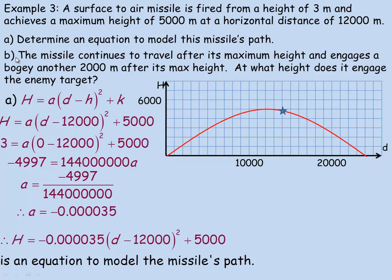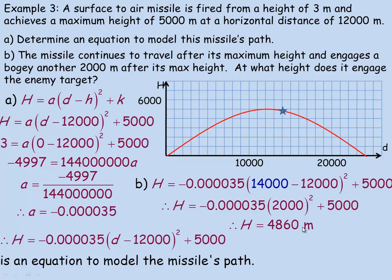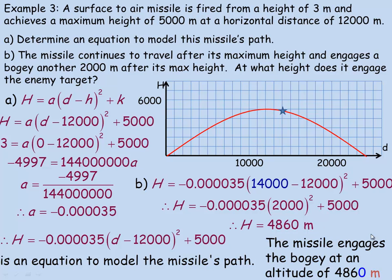For part B, the missile engages a target 2,000 meters after its maximum height. The maximum occurred at d equals 12,000, so this is at d equals 14,000 meters horizontally. We substitute 14,000 in place of d in the equation. 14,000 minus 12,000 is 2,000, and squaring that gives 4,000,000. Multiplying by negative 0.000035 and adding 5,000 gives a height of approximately 4,860 meters. So the missile would engage the enemy target at 4,860 meters off the ground.